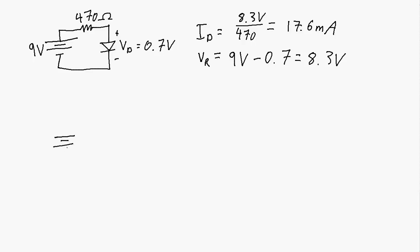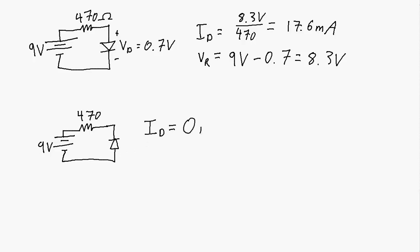Now with the same voltage source and resistor, but with the diode oriented in the opposite direction, the diode is reverse biased. The current through the diode is 0 milliamps, the voltage across the resistor is 0 volts, and the full 9 volts appears across the diode.